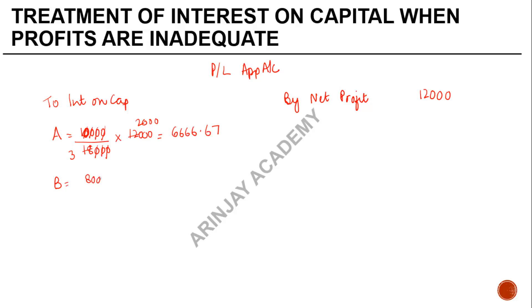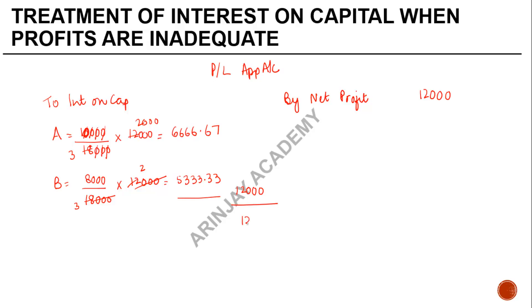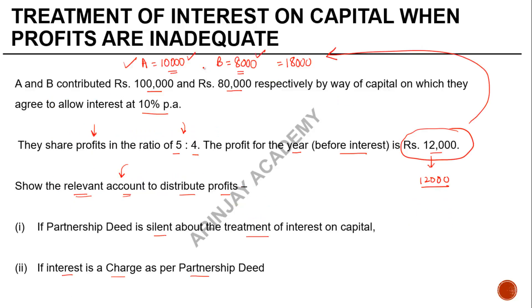Similarly for B: 8,000 over 18,000 multiplied by ₹12,000 gives approximately ₹5,333.33. The total of the P&L Appropriation Account is ₹12,000 on both sides. There is no remaining profit available for distribution, so nothing further is done here.